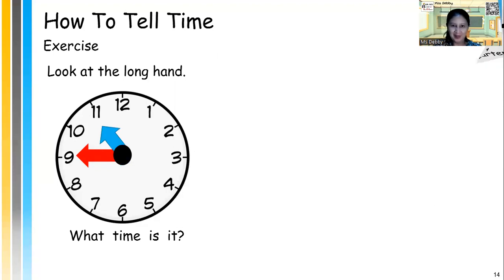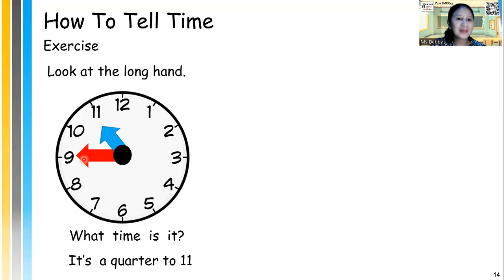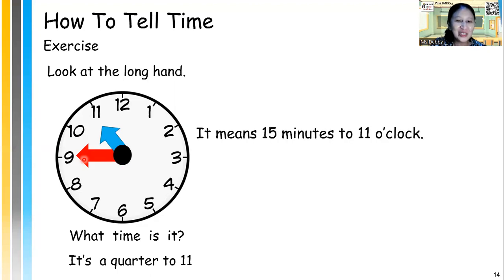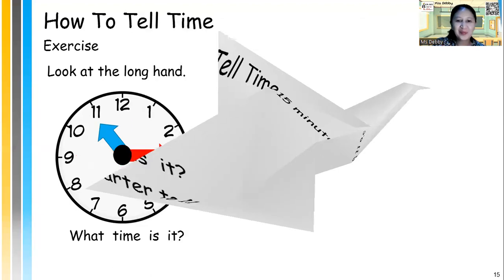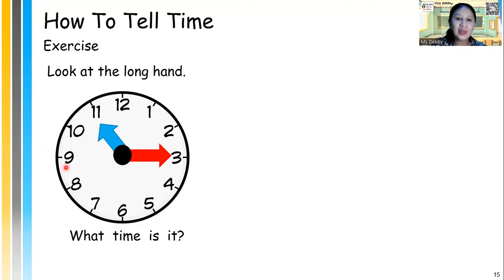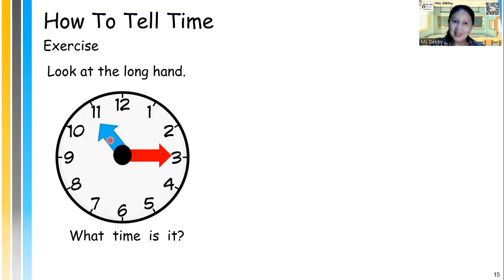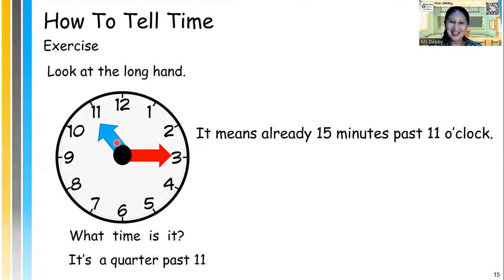And this one? What time is it? It's quarter to 11 — it means 15 minutes to 11 o'clock. Now, the long hand points at number 3. Remember, when the long hand points at number 3, that means it's a quarter past — 15 minutes past from, look at the short hand, 11. So what time is it? We can say it's a quarter past 11. It means already 15 minutes past from 11 o'clock.